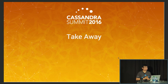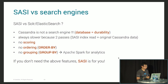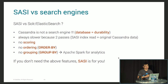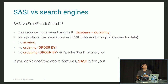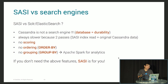Takeaway: how does SASI compare to search engines like Elasticsearch or Solr? Cassandra is not a search engine — it will always be slower. When you use a secondary index with Cassandra, you have two paths: one to read the index data and one to read the original data in the SSTable. With Solr or Elasticsearch, you are only reading the index. There is no scoring, no ORDER BY, no grouping. If you don't need those features, SASI is fine.